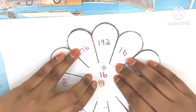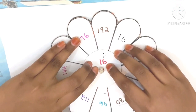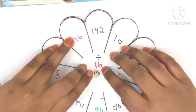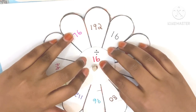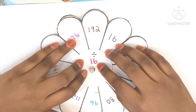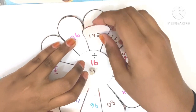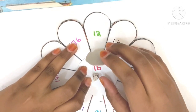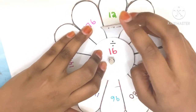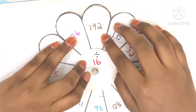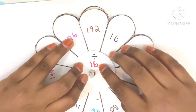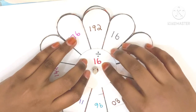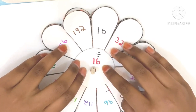Now, 192 divided by 16. Hmm, this is a very hard question. Yes, I got it — it is 12. My answer is correct. It's 12. So, 192 divided by 16 is 12. Did you like the division wheel? Thanks for watching!